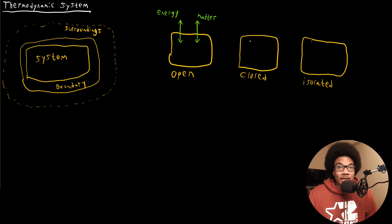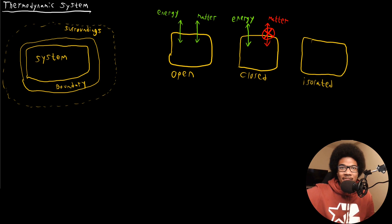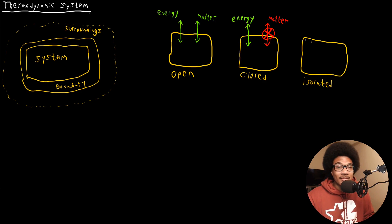In a closed system, energy is allowed to escape — it can be transferred in and out — but matter cannot be transferred in and out. Sticking with this analogy, if you put a sealed lid on your pot, then no gas can escape and it's now a closed system. But obviously, if you still touch the sides, you'll still feel heat — that energy — escaping. So matter is no longer able to escape; that's the definition of a closed system.